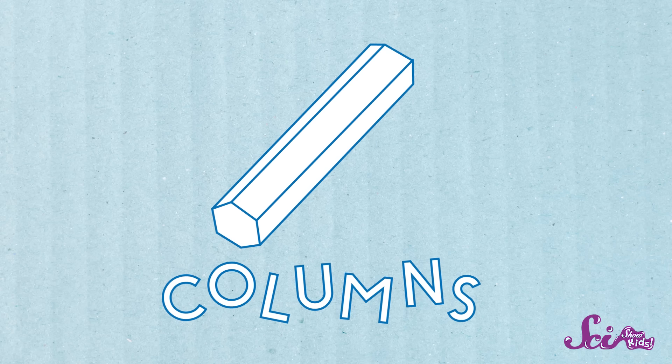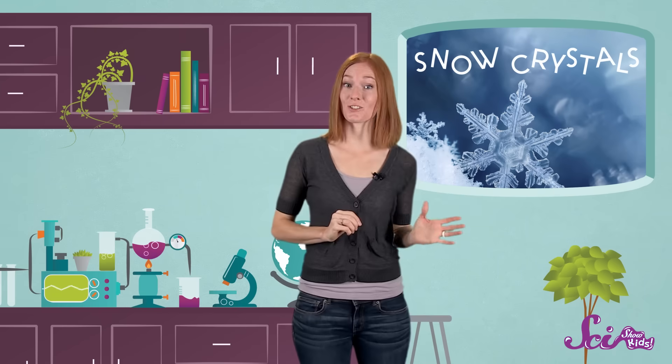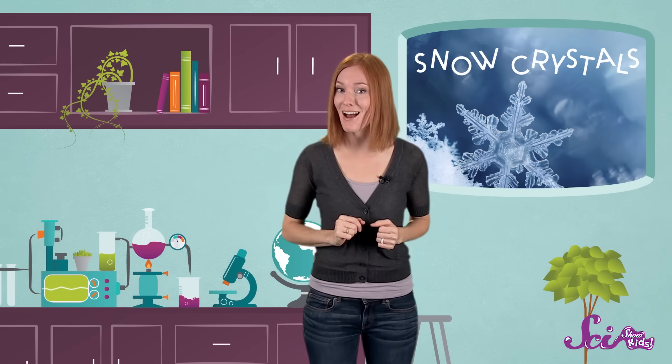And then there's probably the most famous shape, called dendrites. They look kind of like stars that have sprouted tree branches. The shape that each snow crystal takes depends on what the conditions were like as it formed in the cloud.